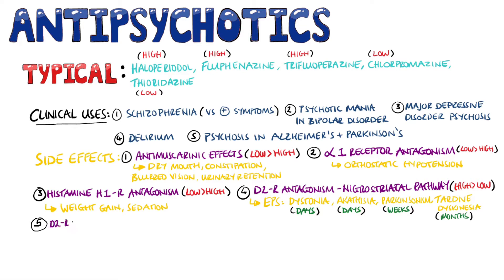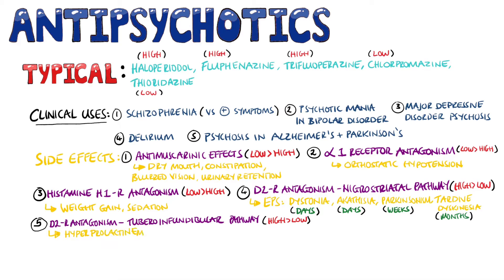Blockage of the D2 receptors in the tuberoinfundibular pathway, which is more common in the high potency than in the low potency, can lead to hyperprolactinemia, giving galactorrhea, breast soreness, and amenorrhea in females, while giving impotence and decreased libido in males.